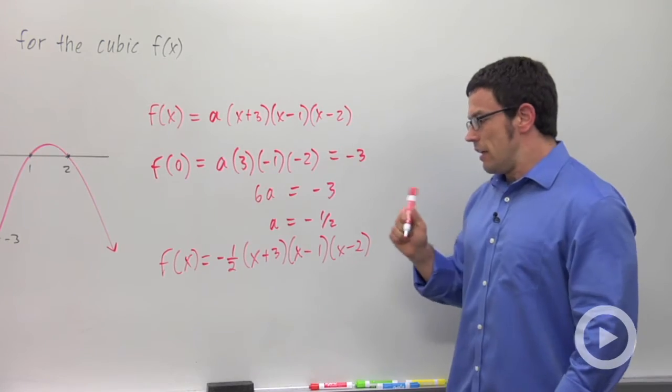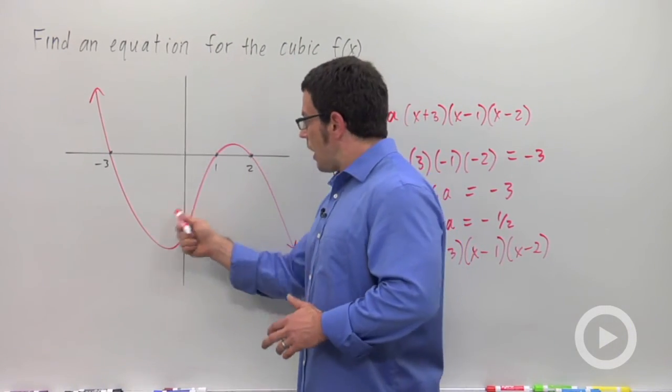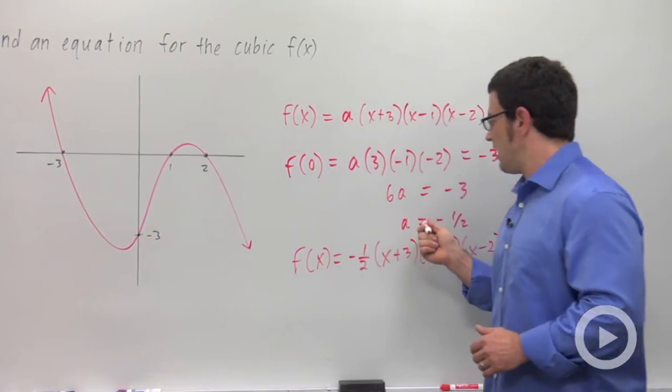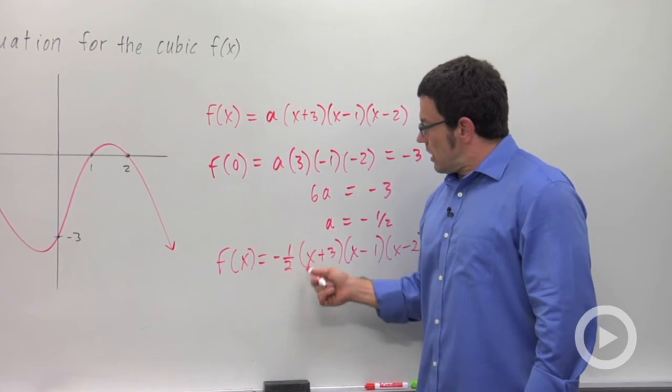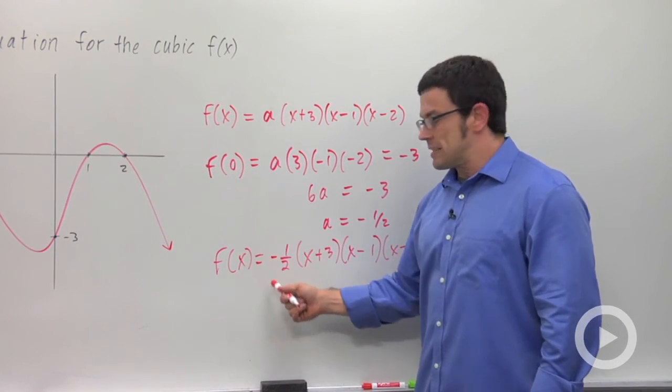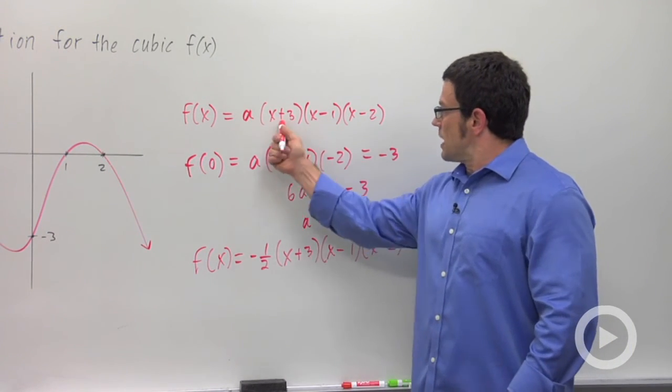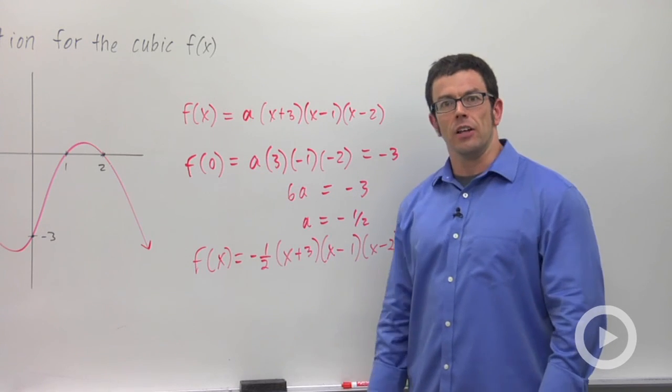Now, you could see that if we hadn't been given this point or any other point other than the x-intercepts, we wouldn't be able to actually find this value of a, and we could make a anything we want. But when you're given another point, you actually can determine the exact value of a and come up with the right formula in the end. Remember, start with the intercepts, put an a here, and use another point to find the value of a.